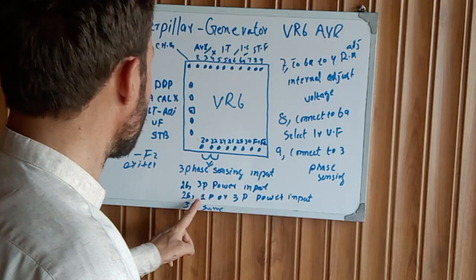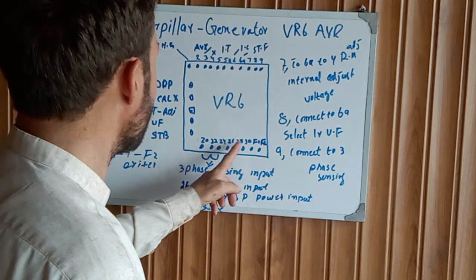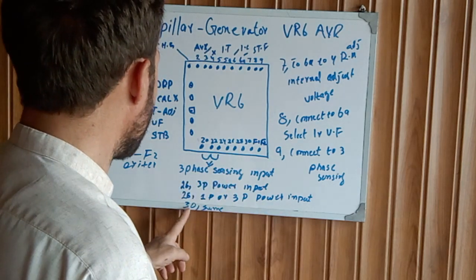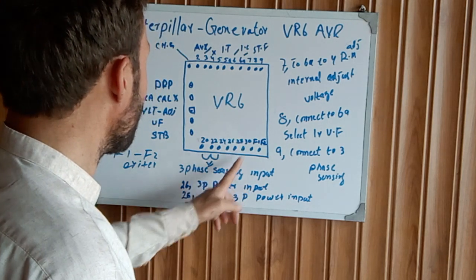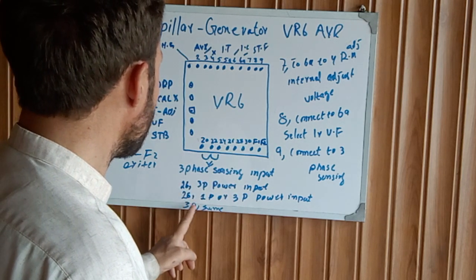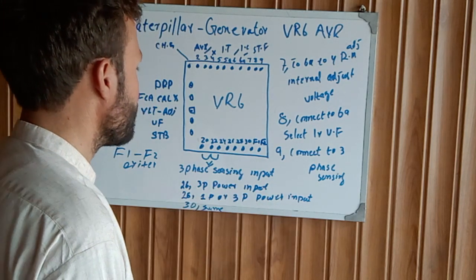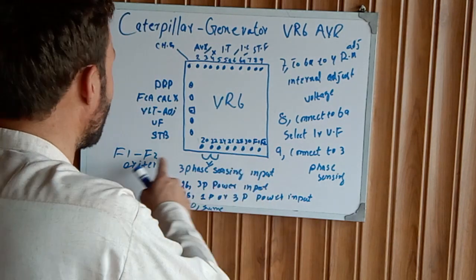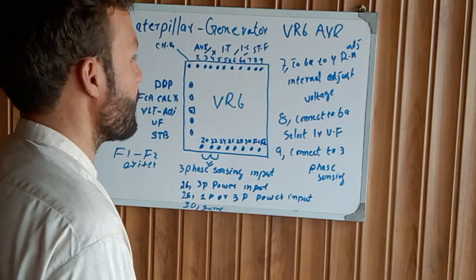And 30, one phase or three-phase power input. And finally, the F1 and F2 is our excited supply.